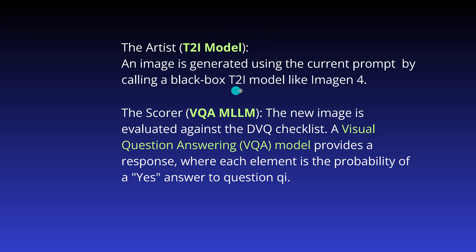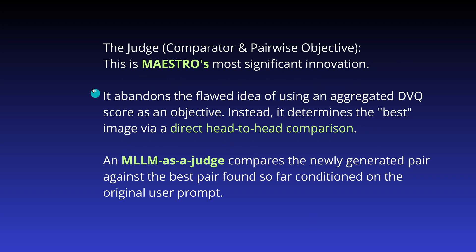We start with the artist — any black box model you like. Then we have a scorer: the new image is evaluated against the checklist, and a visual question answering model provides responses, going through the checklist with yes/no answers where each element is the probability of a yes answer to each particular question. For the judge, we go beyond scalar reward functions — it makes a direct head-to-head comparison from reinforcement learning, where a multimodal LLM as a judge compares a newly generated pair against the best pair found so far, conditioned on the original user prompt and all the information in the memory of this multi-agent system.